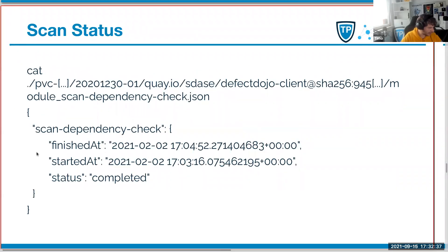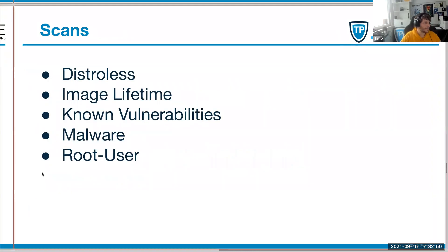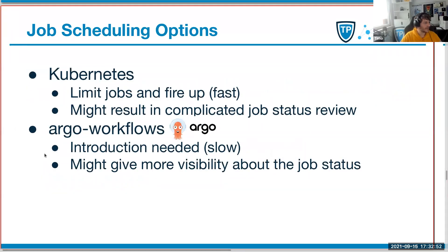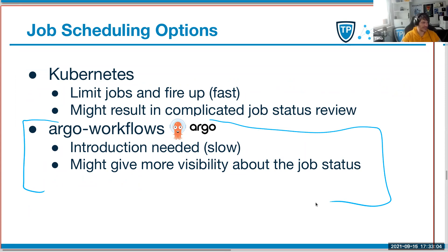Your scan result can look like this - it's a JSON, and it has information like when it started, when it finished, how the DefectDojo upload status is, other findings, and so on. Last time we talked about how to do this and we went through to Argo workflows. So the real process is now in Argo workflows, as you will see in the demonstration in a few minutes.